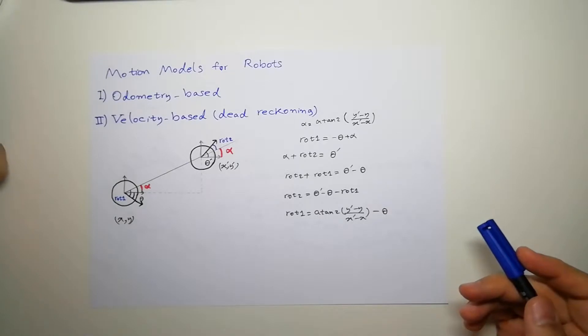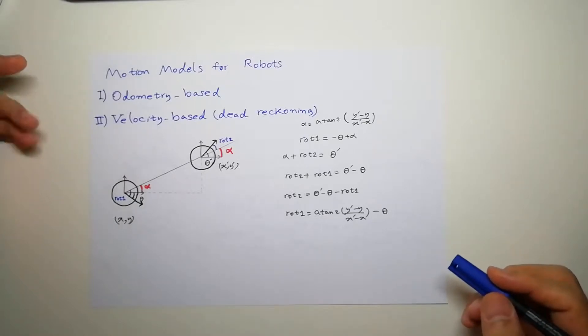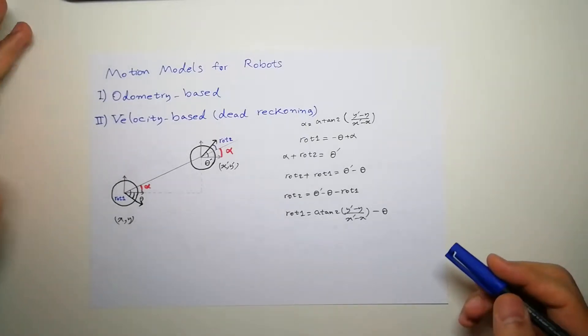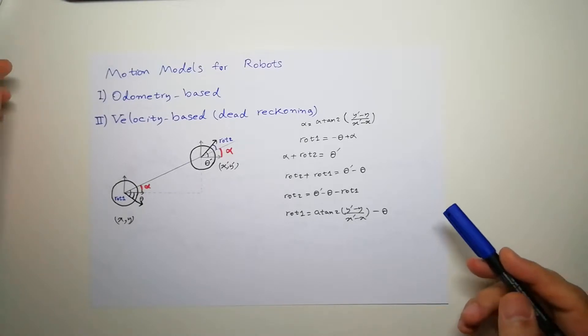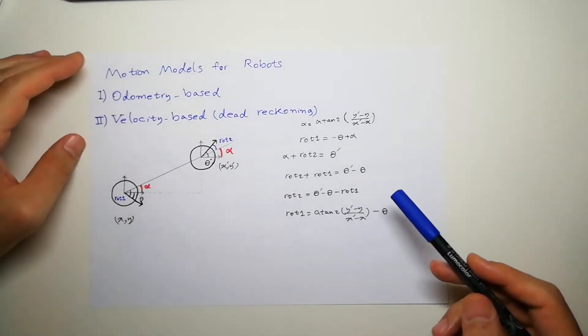Hi, in this video I'm going to explain the motion model for robots. We have an odometry-based model, which is for a robot which has a wheel, or we could have a velocity-based model, which is a more general form.